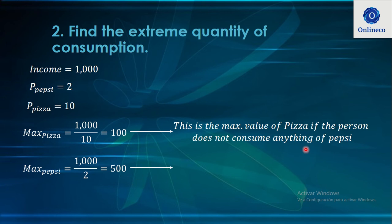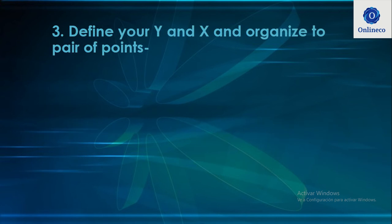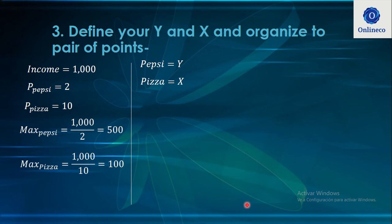So the maximum quantity of pizza is when the person consumes nothing of Pepsi, and the maximum quantity of Pepsi is when the person consumes nothing of pizza. Next, we define the Y and X axes. We'll assign Pepsi as Y and pizza as X. Note that this is not a fixed rule — assigning them differently gives a different equation but leads to the same result.